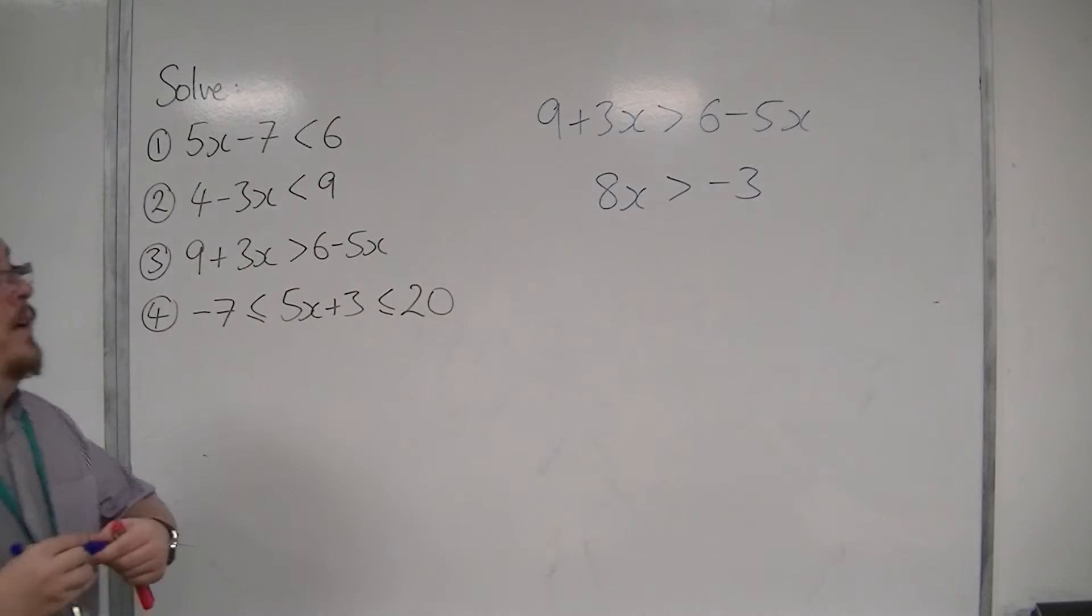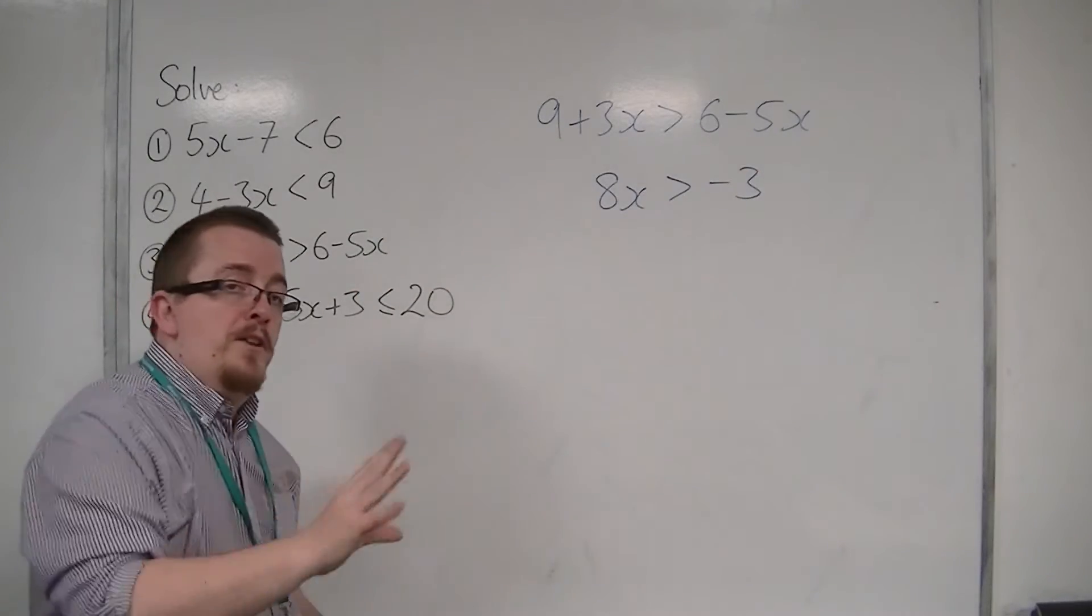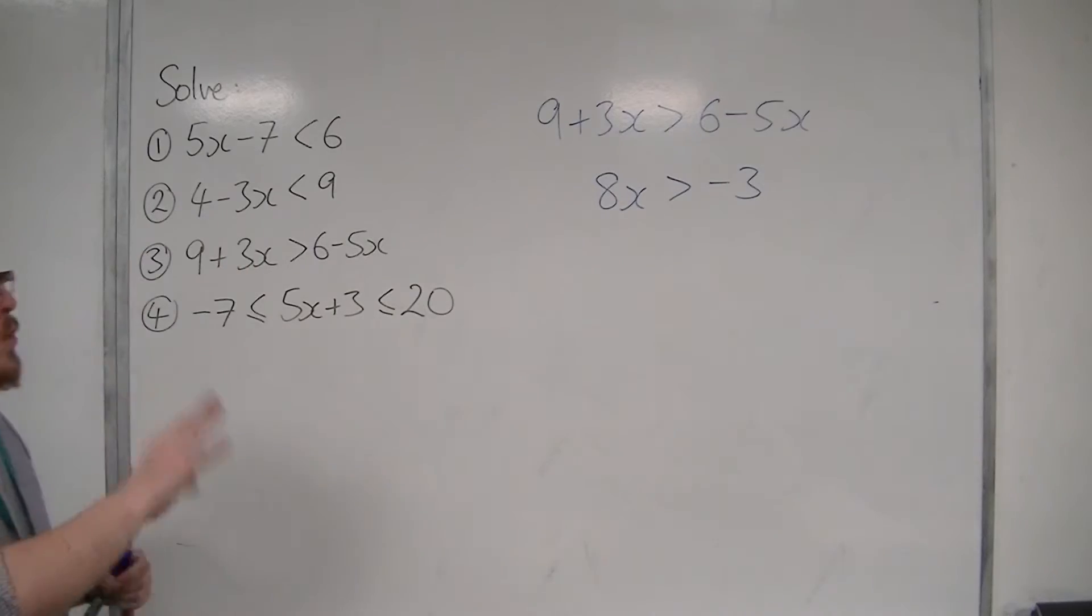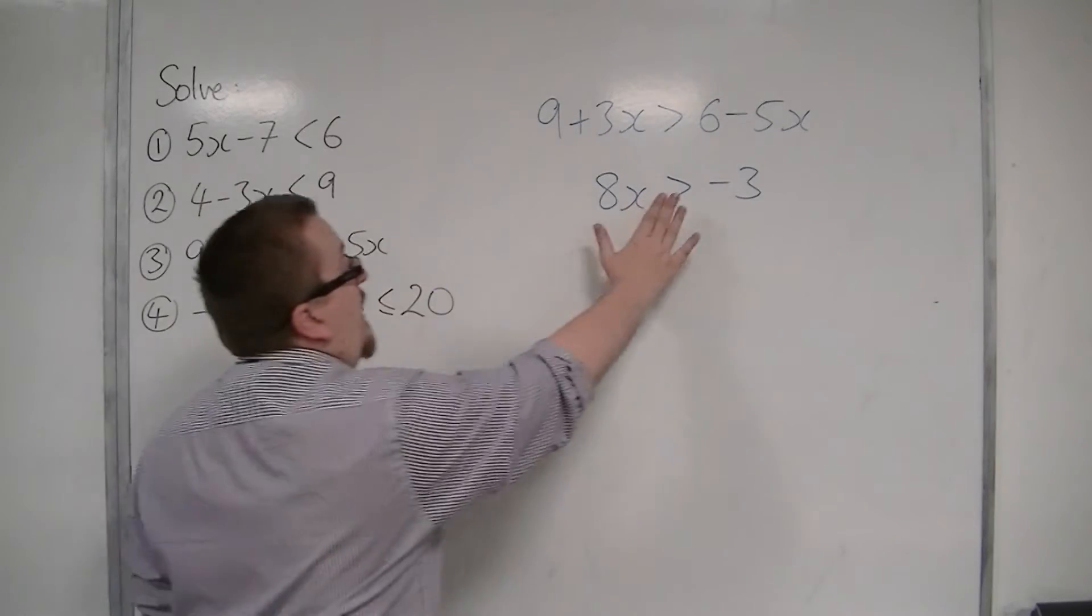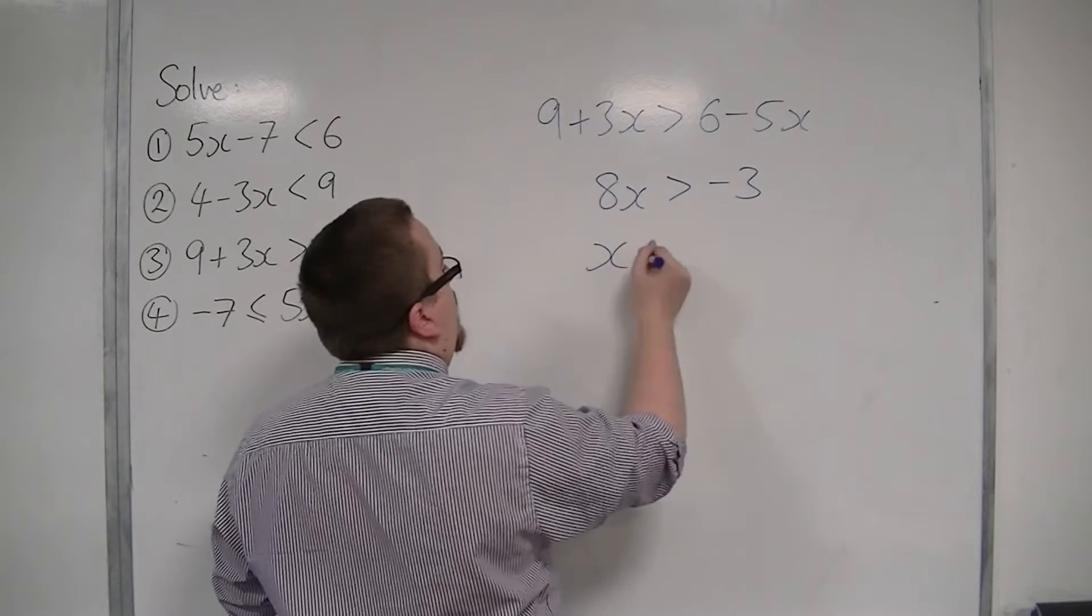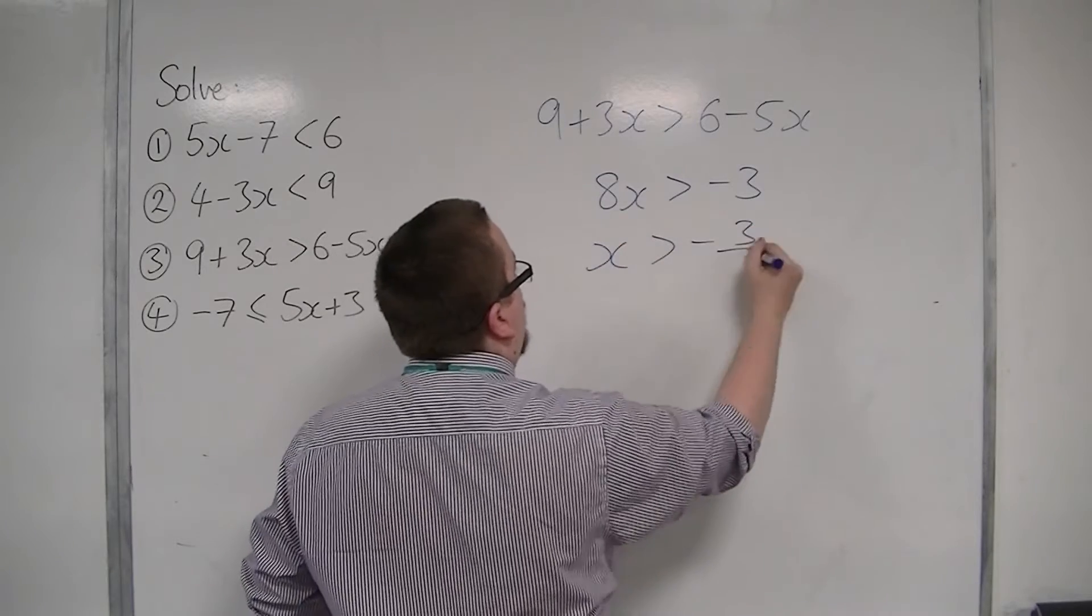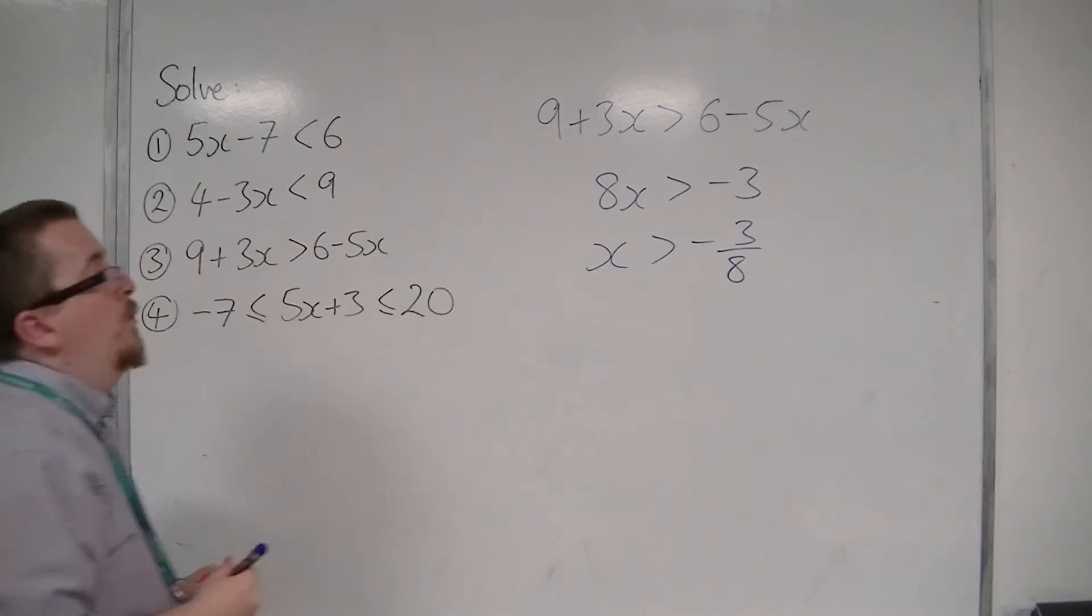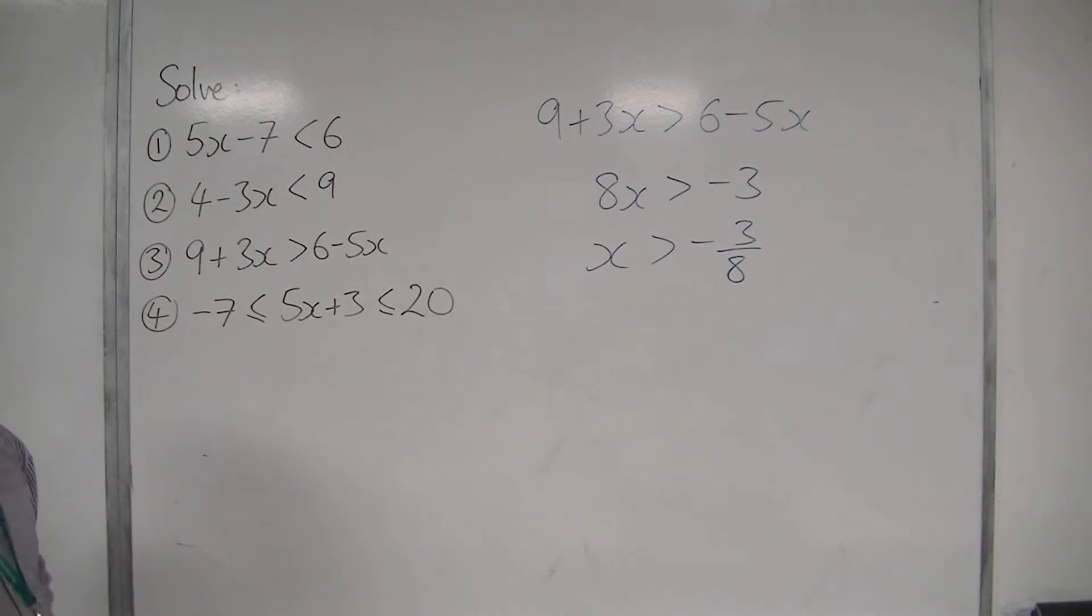So in that process, at no point have I multiplied or divided through by a negative. So the inequality sign stays as it is. And then I can divide both sides by 8. So x is greater than minus 3 eighths. And that would be the solution to number 3.